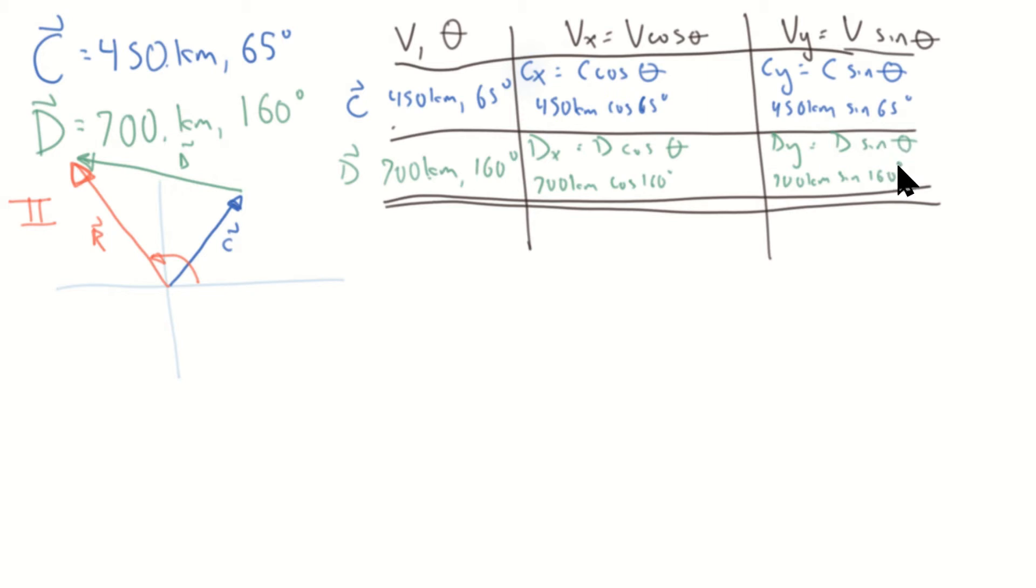So we can plug those values in. It's going to be 450 kilometers times the cosine of 65 degrees, 450 kilometers times the sine of 65 degrees, 700 kilometers times the cosine of 160, and 700 kilometers times the sine of 160. Moving forward, I will probably just write the answers to these equations, but it's good to practice. So now we break out our handy dandy calculator and see what we get. We have 450 times the cosine of 65. Make sure your calculator is in degrees, not radians. And I get a value of 190.2 kilometers.